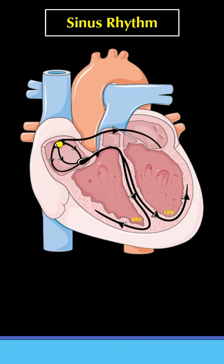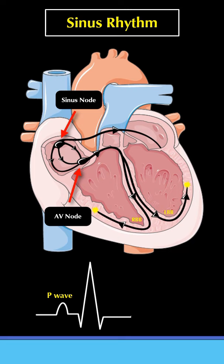In a normal sinus rhythm, electrical pulses start from the sinus node at the heart's top, travel to the AV node, and then spread to the main chambers, causing the heart to pump. This precise sequence happens regularly, around 60 times per minute.